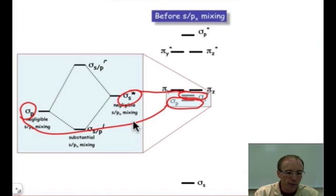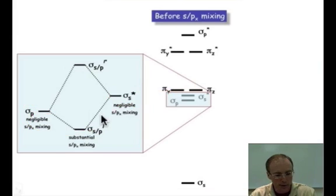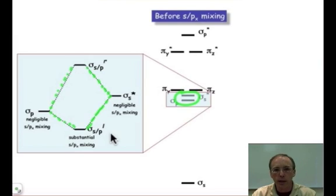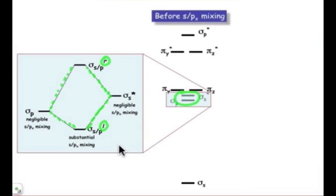And here's their levels when we say that sigma s px mixing is negligible, but then when we turn on sigma s p mixing, we allow those to mix and we produce sigma sp, a new sigma sp. I call it L for lowered and R for raised. When we start mixing these orbitals, ideas of bonding and antibonding become a little bit difficult to define, and so I just simply say L and R there.